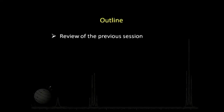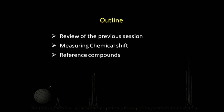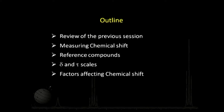Today, we will continue our discussion and talk about the measurement of chemical shift and the factors affecting chemical shift. The session is planned as follows: we will briefly review the previous session, then talk about how we measure and quantify chemical shift, the reference compounds we use, and the two scales used for chemical shift — delta and tau scales. Then we will talk about the factors affecting chemical shift and sum up at the end.